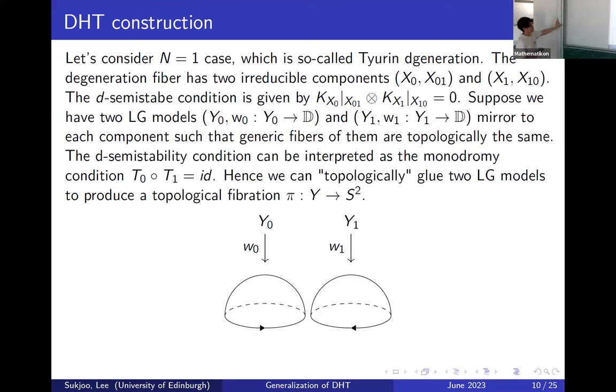We can just rewrite the semi-stability condition under the canonical line bundle of the monodromy correspondence. What this tells you is the following relation: we have the normal class, so the inverse of K_{X_i}, so we have all the monodromy. The inverse direction and they can be identified. What we can do is topologically glue these two Landau-Ginzburg models, and it produces a topological fibration.